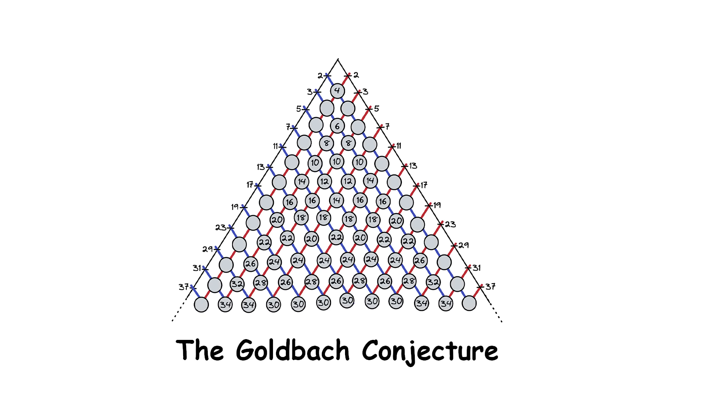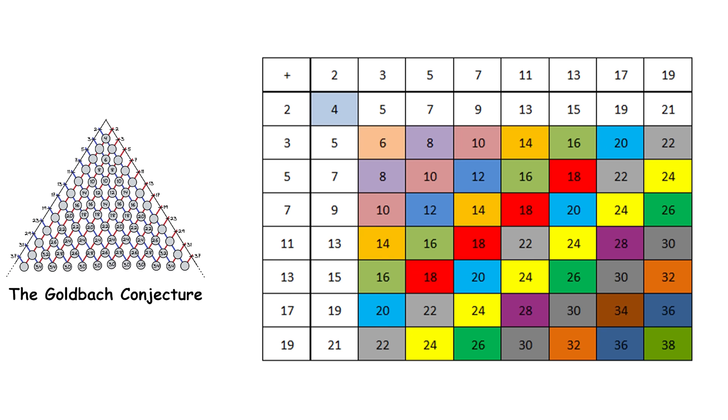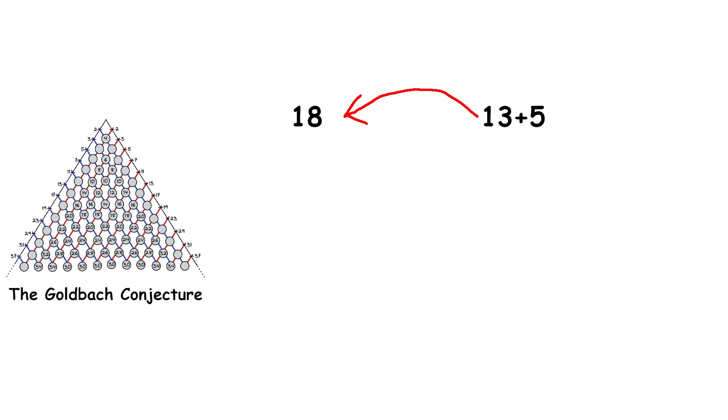Goldbach's conjecture is, every even number greater than two is the sum of two primes. You check this in your head for small numbers, 18 is 13 plus 5, and 42 is 23 plus 19.